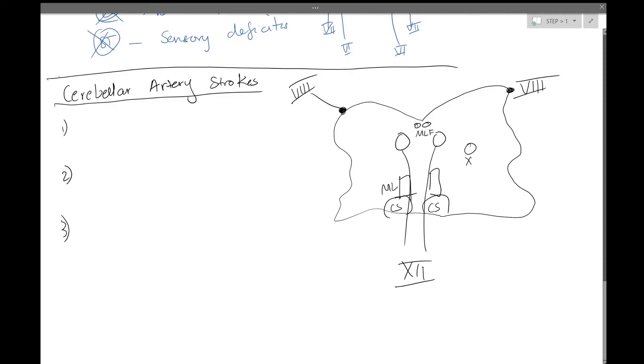Now, if this is 12, a little bit laterally to that, we're going to have cranial nerve 10. So this is cranial nerve 10. And we're also going to draw the spinothalamic tract right about here.